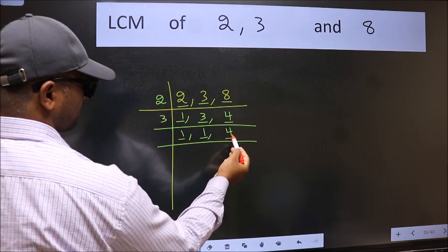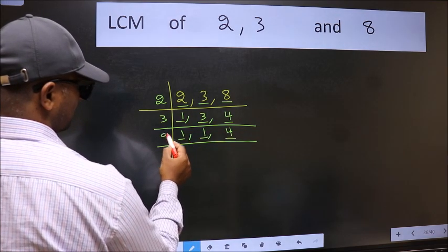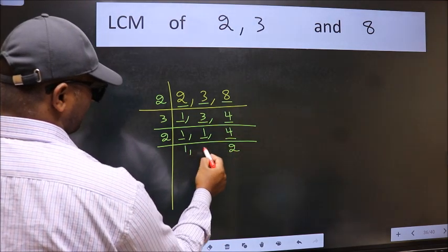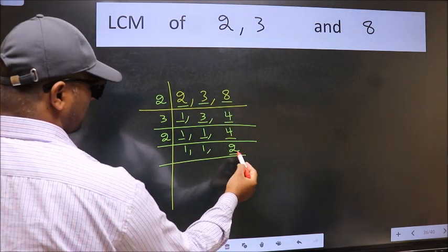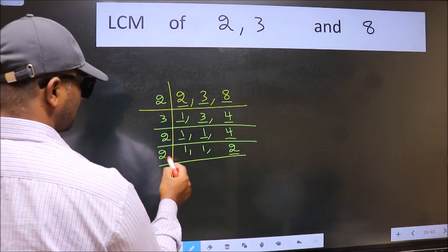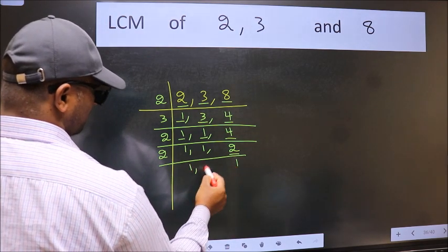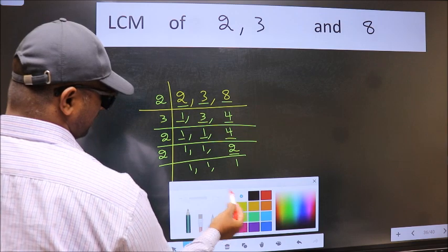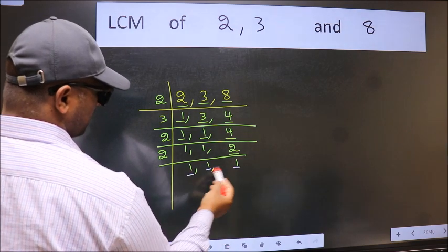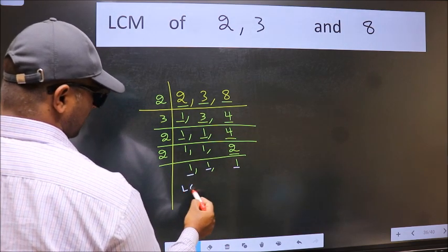So focus on the next number 4. 4 is 2×2 is 4. Now here we have 2, 2 is a prime number so 2×1 is 2. So we got 1 in all the 3 places. So our LCM is,